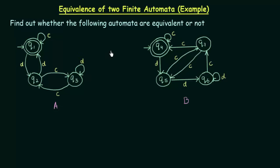One of the conditions for equivalence is that if in one automaton the initial state and final state are the same, then in the other automaton the initial state and final state must also be the same for them to be equivalent. This condition is satisfied in this example. The other condition is that for every pair of states, the pairs generated on a particular input should be either both final states or both intermediate states.